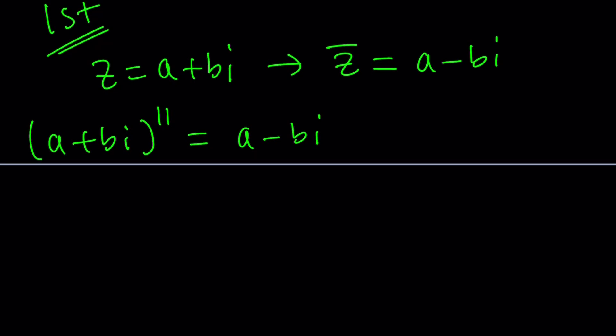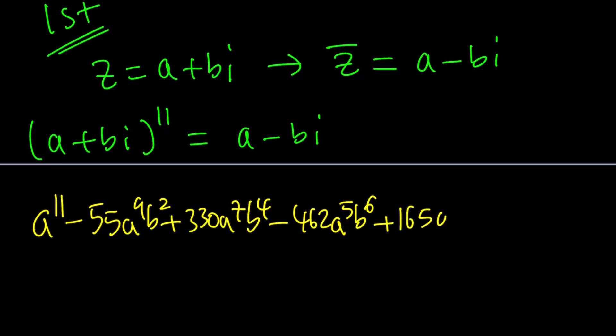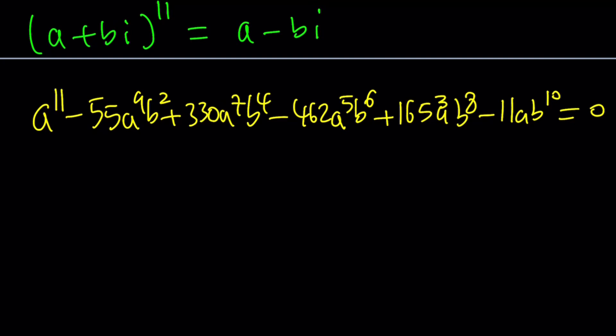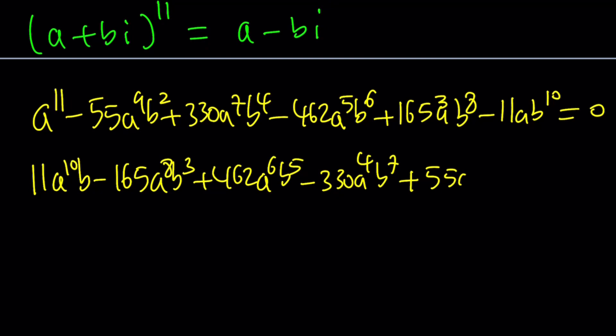Let me go ahead and write down that system for you. That's going to be a to the power 11 minus 55 A to the 9 B squared plus 330 A to the 7 B to the 4th minus 462 A to the 5 B to the 6. And then plus 165 A to the 3rd B to the 8th minus 11 A B to the 10 equals A. Notice that the powers are skipping because this is just the real part. And then, of course, there's a section, the imaginary part, which is the terms that has I in them, right?